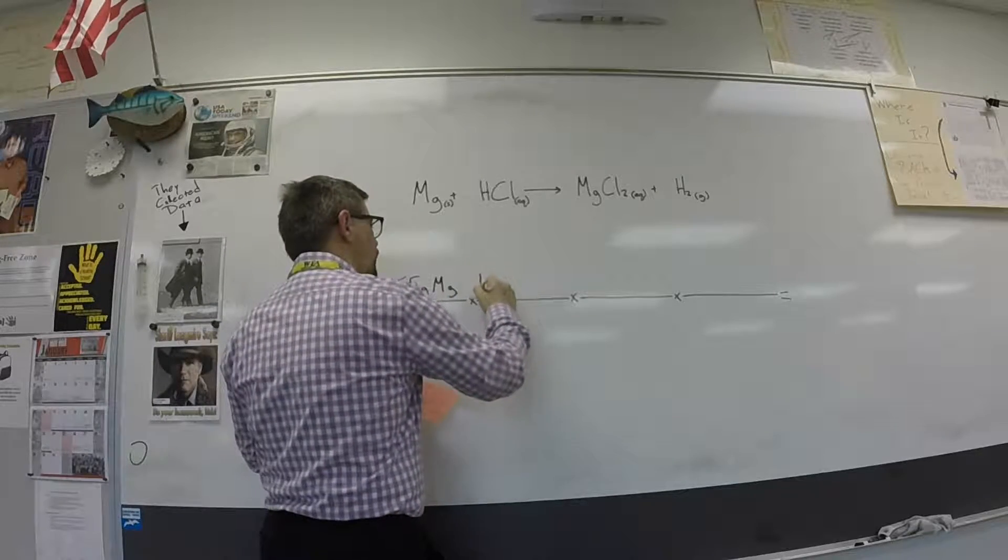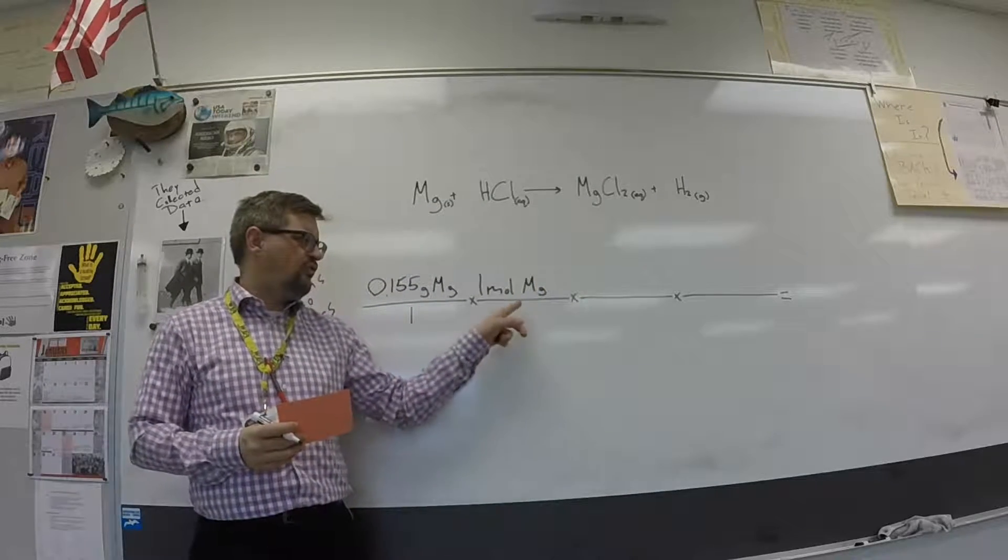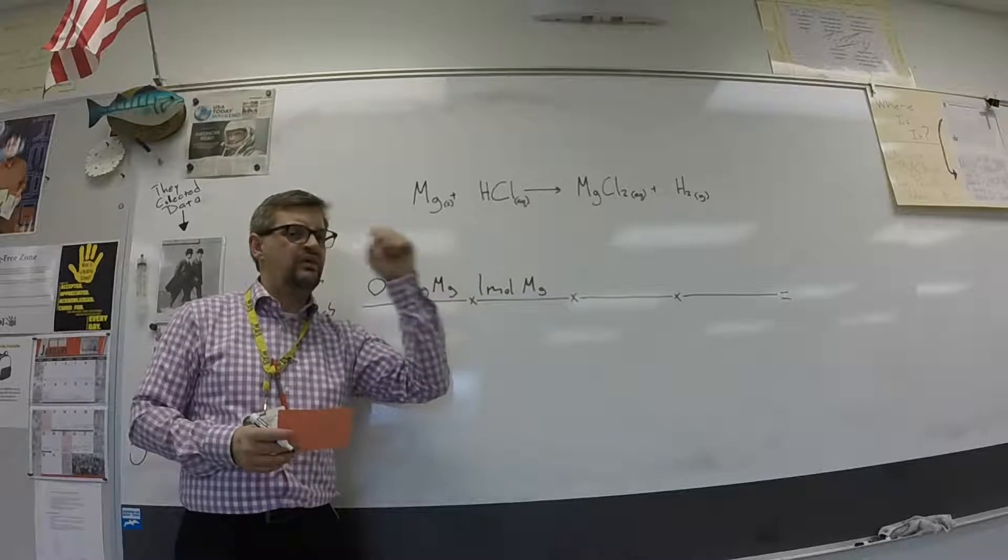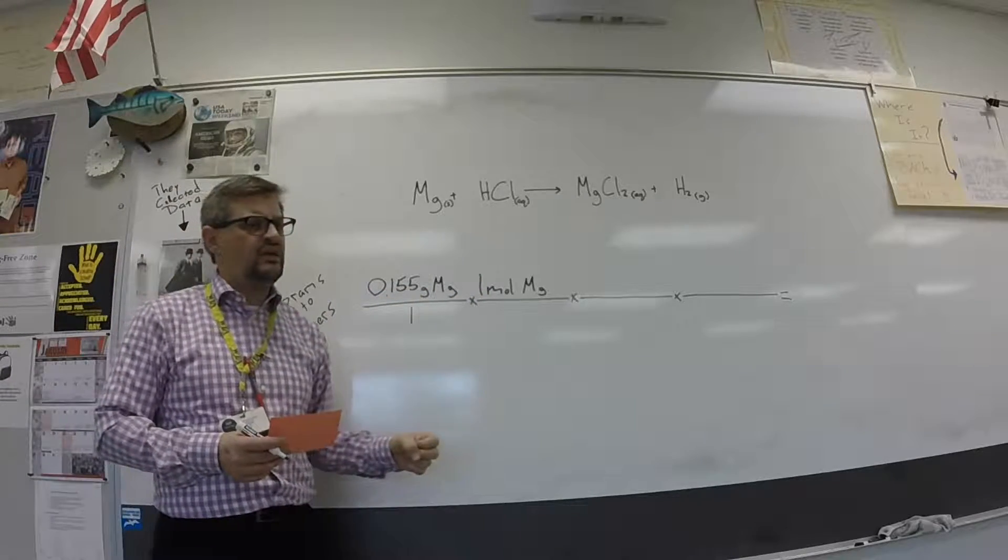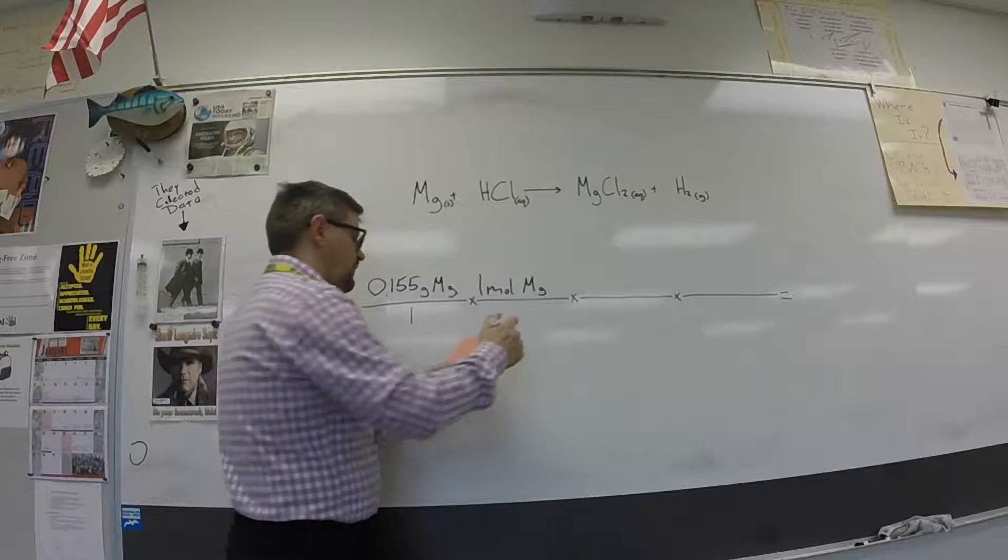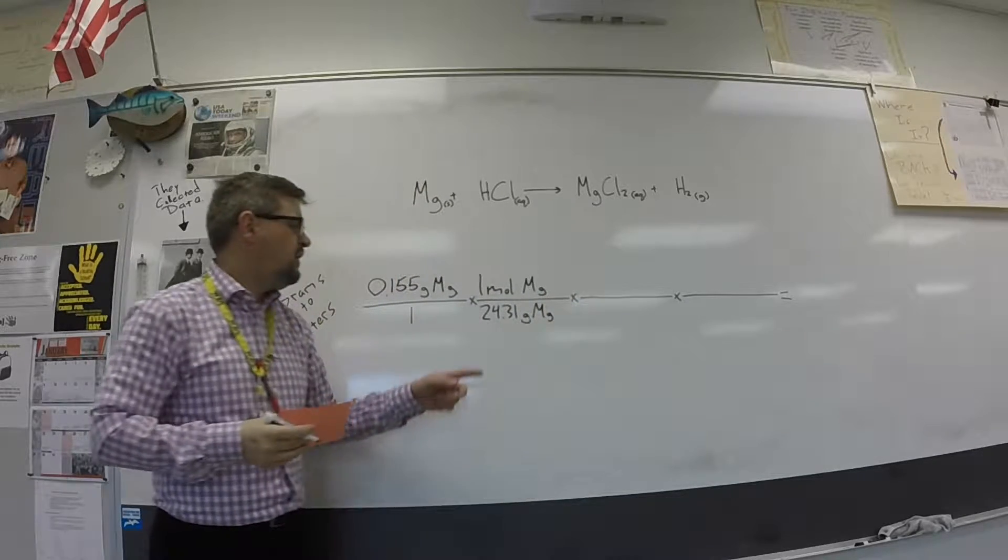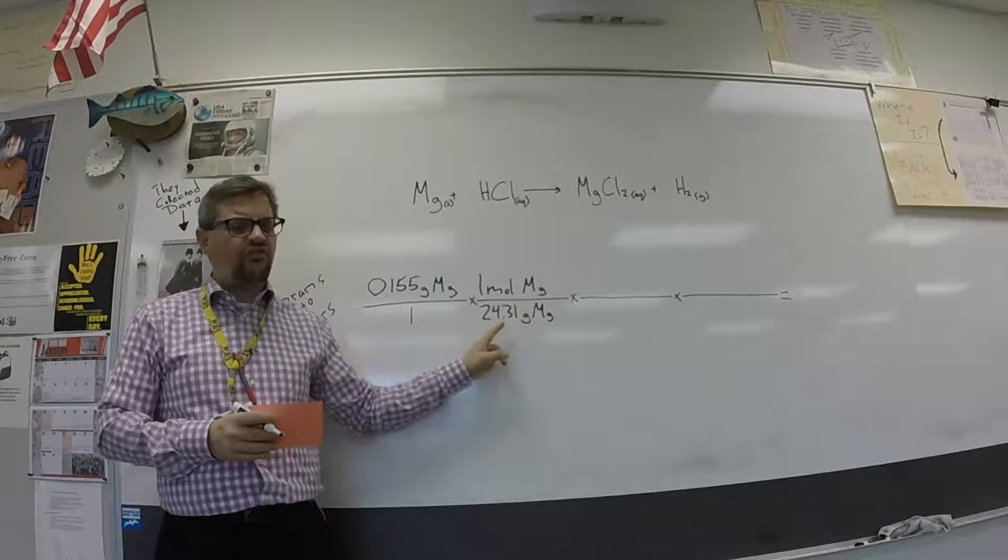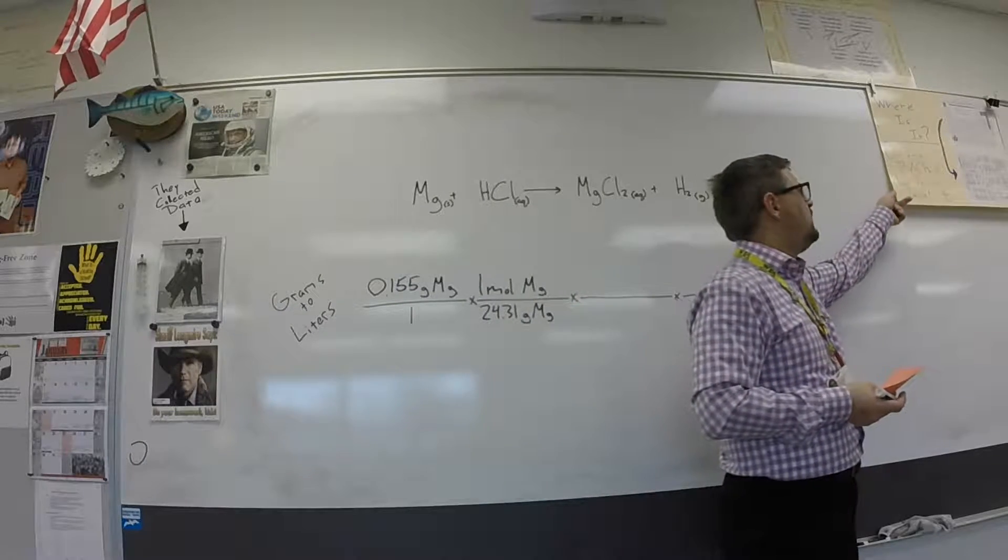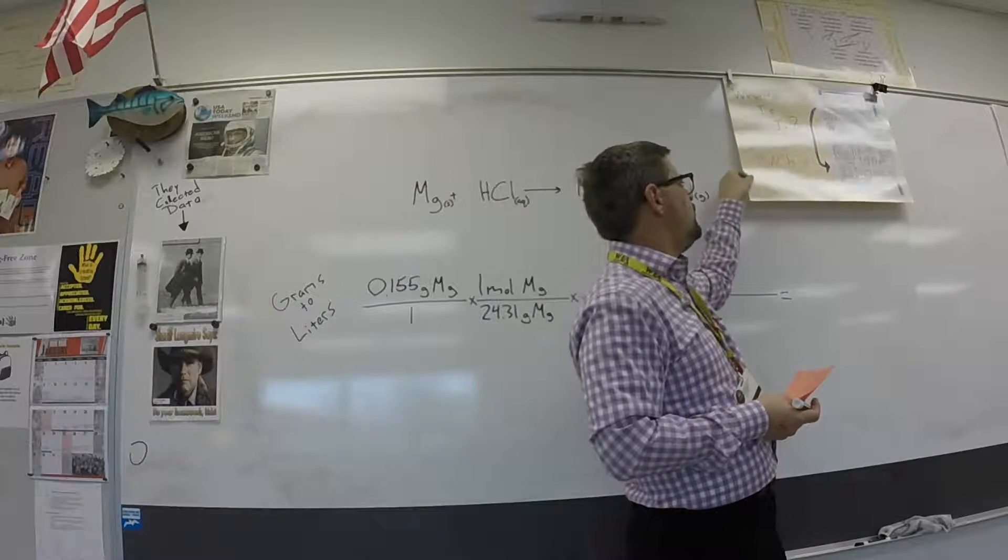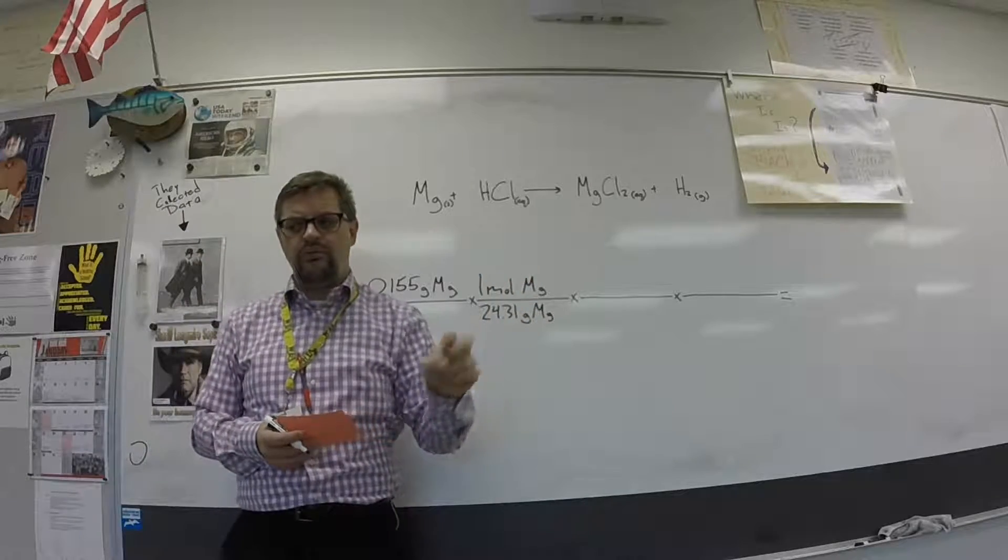So our next step then will always be, in this kind of problem, to go from grams to moles. So in our next fraction, we want to put one mole of magnesium on the top, because again, those are the desired units we want to get to. So one mole over 24.31 grams of magnesium. For magnesium metal, that's the formula mass, which for elements, their formula mass is the same as their average atomic mass on the periodic table. Here's our periodic table right here. And again, average atomic mass listed for magnesium. We're going to use that as our formula mass for that element.